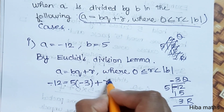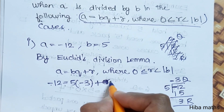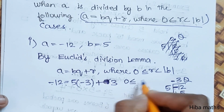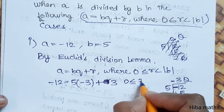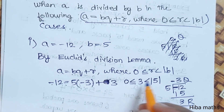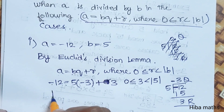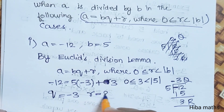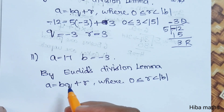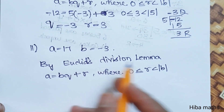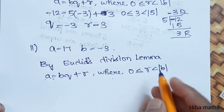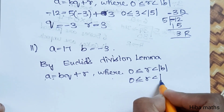Minus 12 is equal to minus 3 times 5 plus r, so r is equal to 3. Now we check the condition: r should be greater than or equal to 0 and less than b. Here r is 3, which is greater than 0 and less than b which equals 5. Condition is correct. So quotient Q is equal to minus 3 and remainder R is equal to 3.